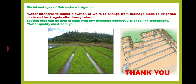Lastly, we discuss about the disadvantages of subsurface irrigation. It is labor intensive to adjust the elevation of the weirs to change from drainage mode to irrigation mode and back again after heavy rains. System cost can be high in sites with low hydraulic conductivity or low rolling topography. Water quality must be high.